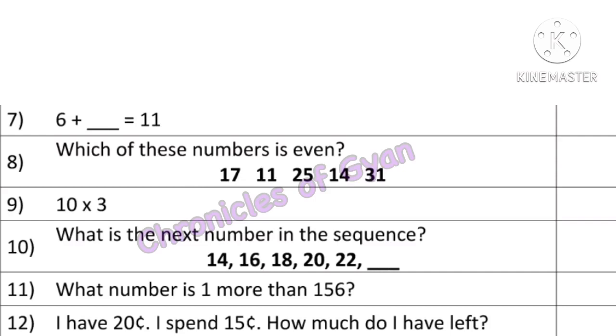Same way, for the 100 times table, 100 has two zeros. So 100 into 2 would be 200. Hence, the answer here is 30.